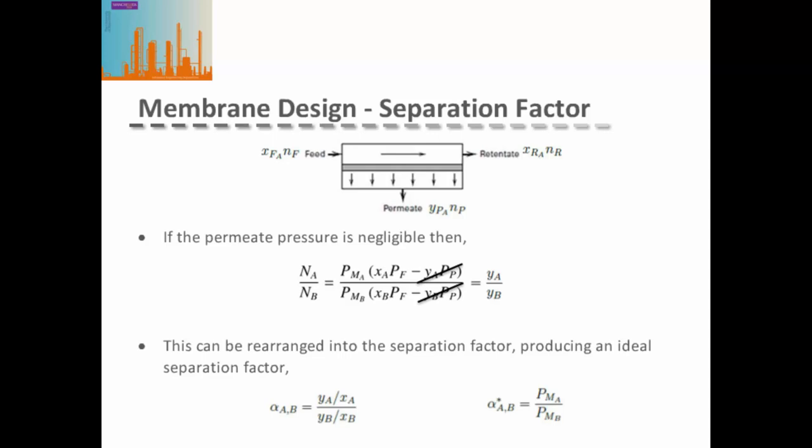We also know that with no sweep gas, the ratio of fluxes must equal the ratio of compositions in the permeate. Therefore, we can rearrange this equation into the form for the separation factor. This produces an ideal separation factor, where the ideal separation factor alpha-star is simply equal to the ratio of the permeabilities of the membrane.